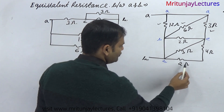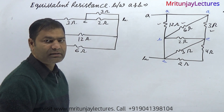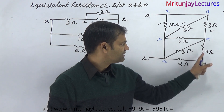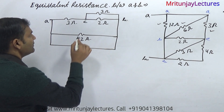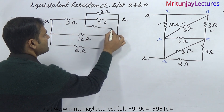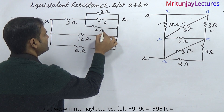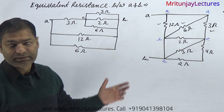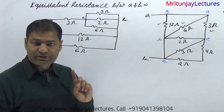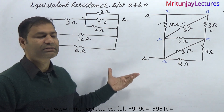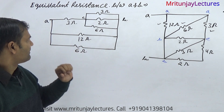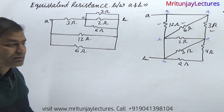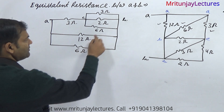Now the next one: two and four are in series — combination of these two is 6, connected between B and C, that is 6 ohm. So the final circuit looks like this. After redrawing the circuit, 3, 2, and 6 are all in parallel, and these two are also in parallel. So first of all, 6 and 3.